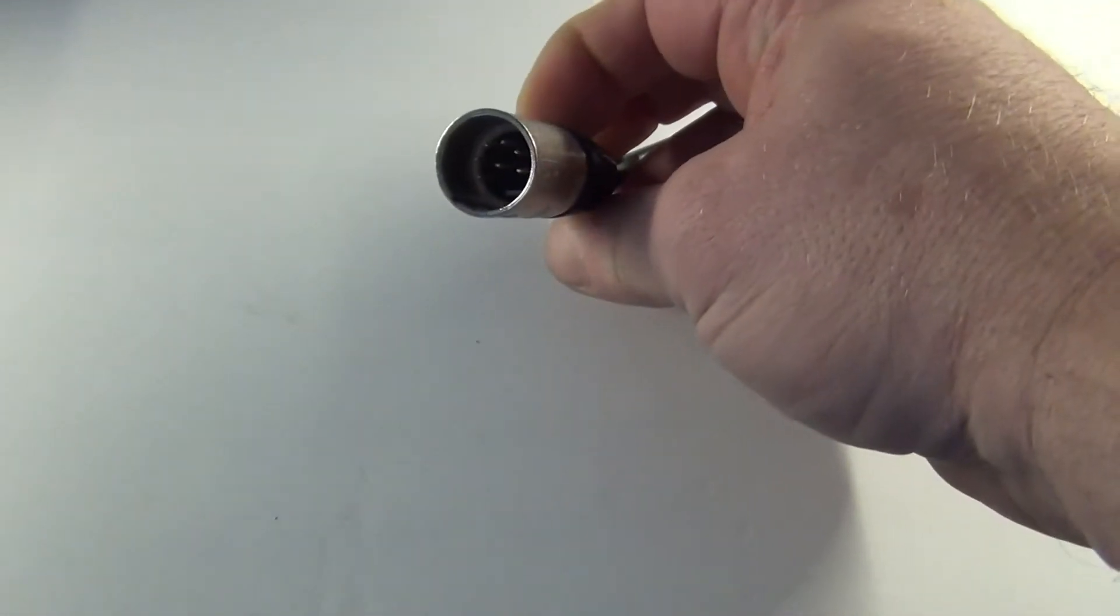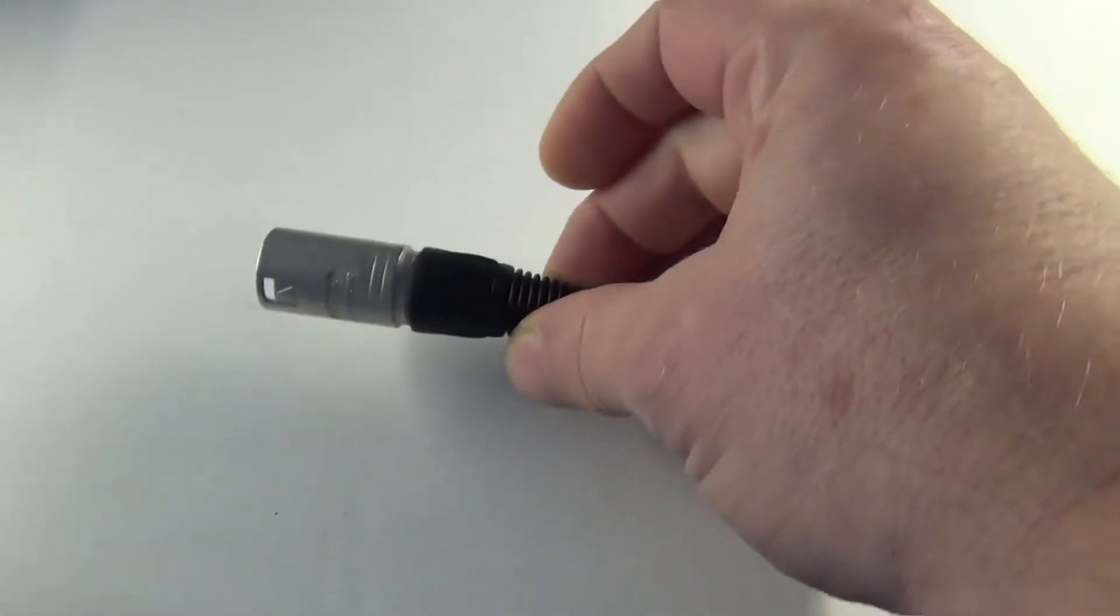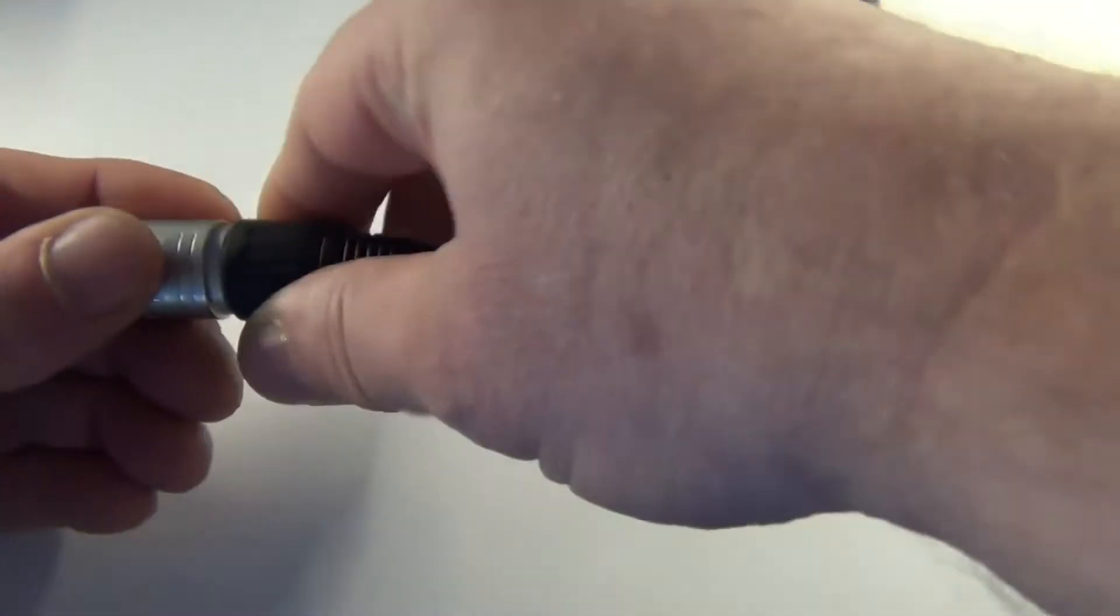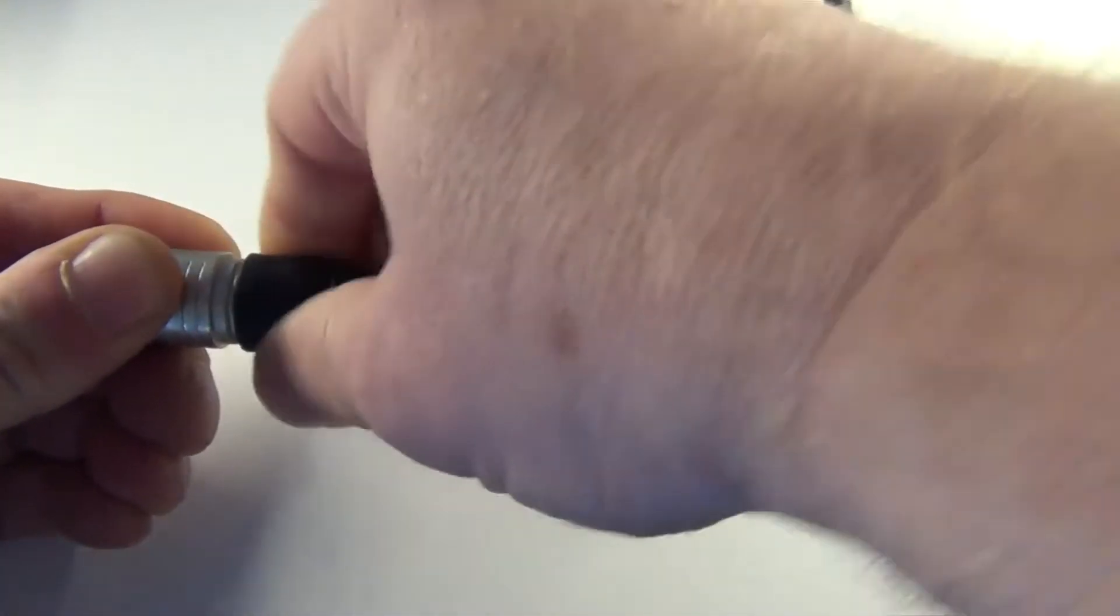Okay, this is the 7-pin XLR connector that comes on the Rotoboss. If you need to ever check the connections in here, this black strain relief will unscrew.